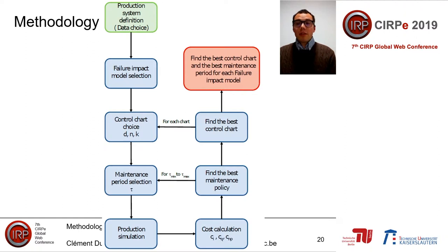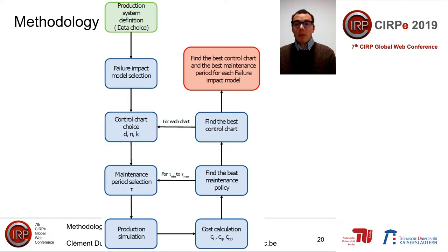For the methodology, we define the system with all its data, select a failure impact model, select a control chart, and select a maintenance period T2. After that, we simulate the production and calculate all costs to obtain the total cost. The best maintenance policy is the maintenance period that minimizes the total cost. We can then change the control chart parameters or the control chart itself to obtain the best maintenance period and best control chart for each failure impact model by minimizing total cost. A short example is given in slide twenty-two.